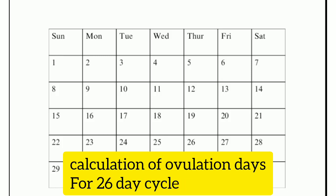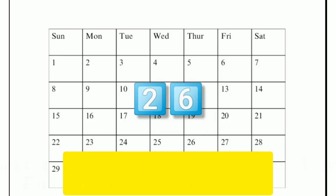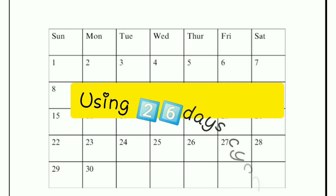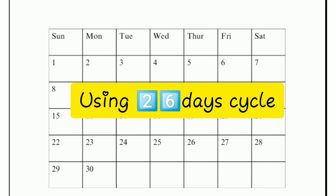So right now, if you're having a cycle of 26 days and you want to get your ovulation date, stay tuned and watch the video until the end.